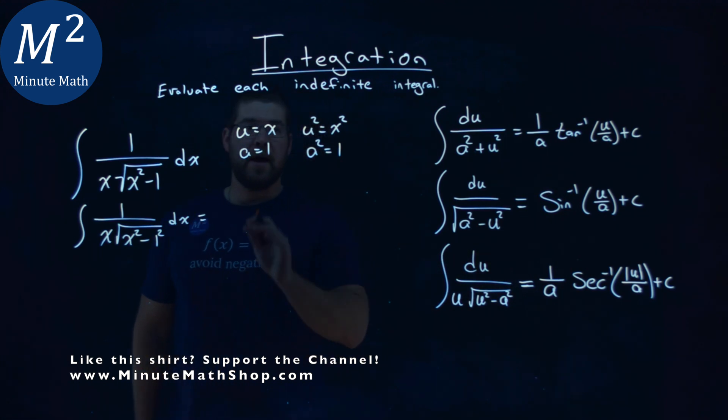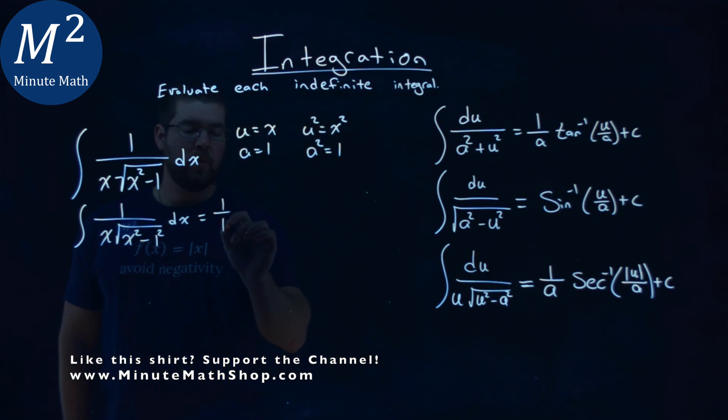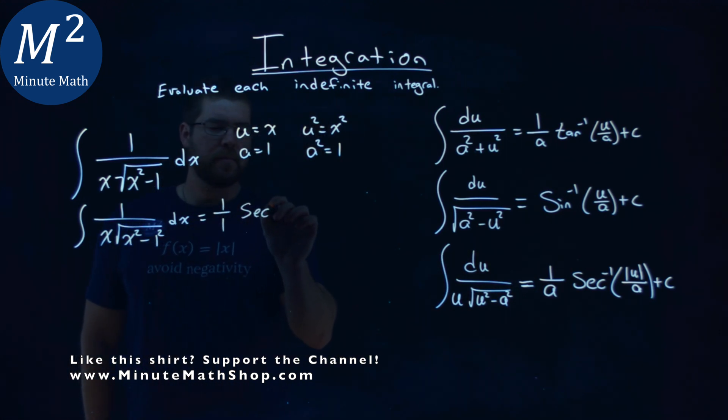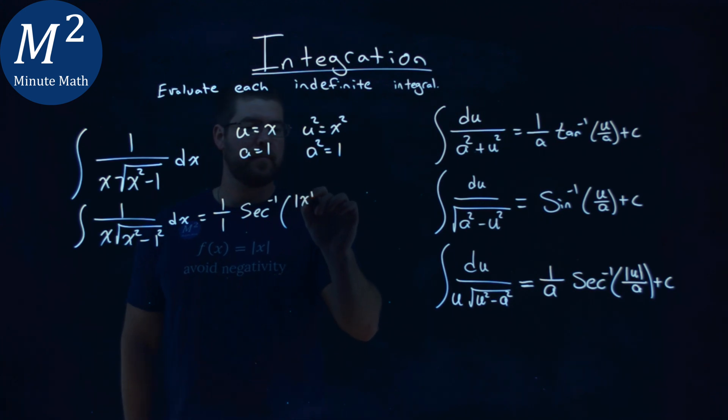Applying our rules, 1 over a, a being 1. So we have 1 over 1 here, arc secant of, now the absolute value of u, so absolute value of x being our u value, over our a value being, well, 1 again, plus c.